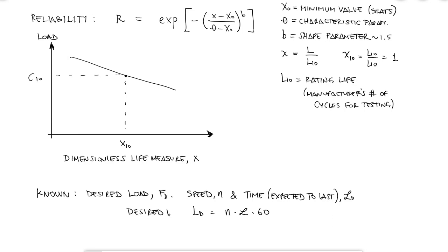So in general, we always have the desired life and the desired load. And of course the desired life can be written as a dimensionless variable if we divide by L10, the rating life of the manufacturer.